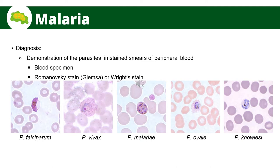The blood-stage parasites of human Plasmodium species exhibit differences in morphology and modify the host erythrocyte differently. For Plasmodium falciparum, the distinguishing characteristic is their crescent-shaped gametocytes. For Plasmodium vivax, their amoeboid trophozoites. For Plasmodium malariae, the rosette formation of their merozoites. For Plasmodium ovale, their compact trophozoites. And for Plasmodium knowlesi, the appearance of their segmented merozoites.